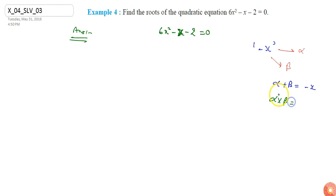And alpha into beta would be product of the remaining terms which is 6x square multiplied by minus 2 which is minus 12x square. So if I take alpha equals to minus 4x,